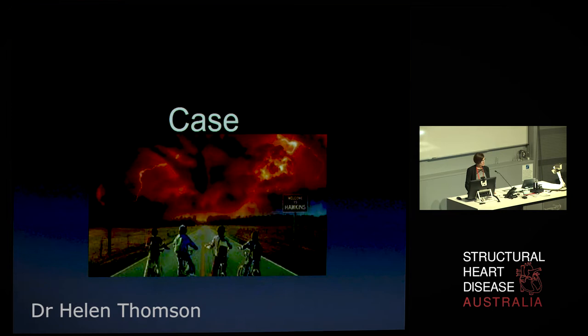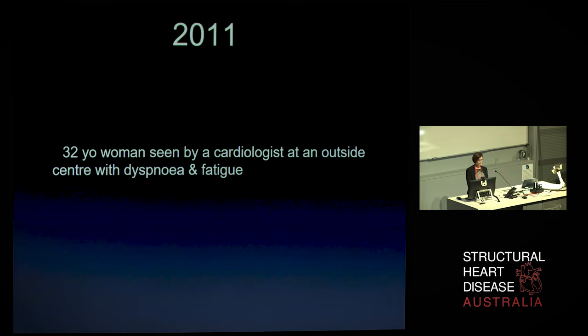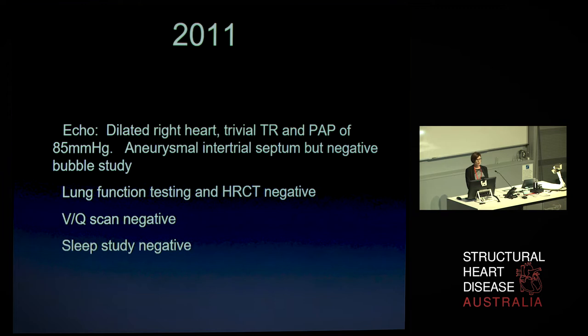I'd like to start with a case. In 2011, a 32-year-old woman was seen by a cardiologist at an external centre, complaining of shortness of breath and fatigue. The first test performed was an echocardiogram, which showed she had a dilated right heart, trivial tricuspid regurgitation, and a markedly elevated pulmonary artery pressure. She also had an aneurysmal intra-atrial septum. A bubble study was performed, and this was negative.